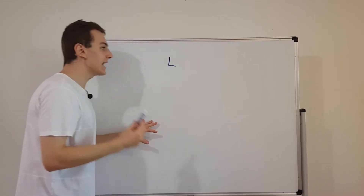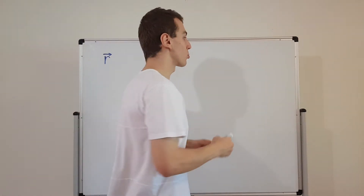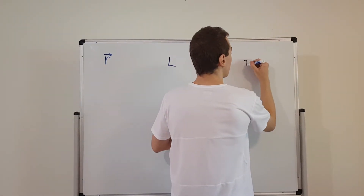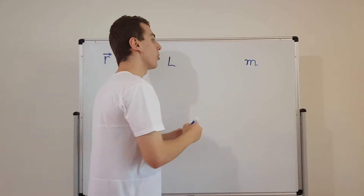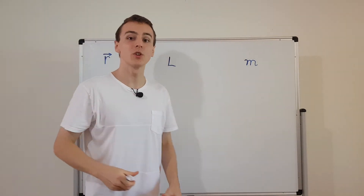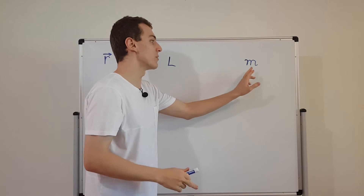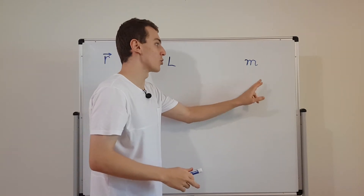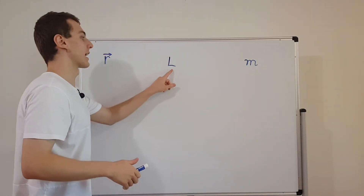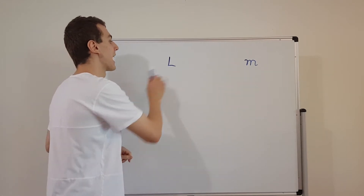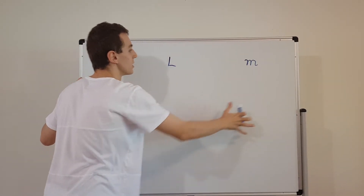The SI unit of length is a meter. Now there's another point of confusion because M often denotes mass, but because we're talking about units here, this denotes the meter. So one meter is the SI unit for length, and length is denoted by L. So everything on this side is going to be units.